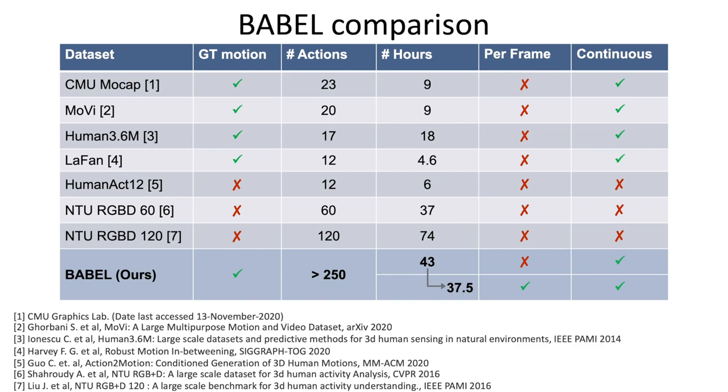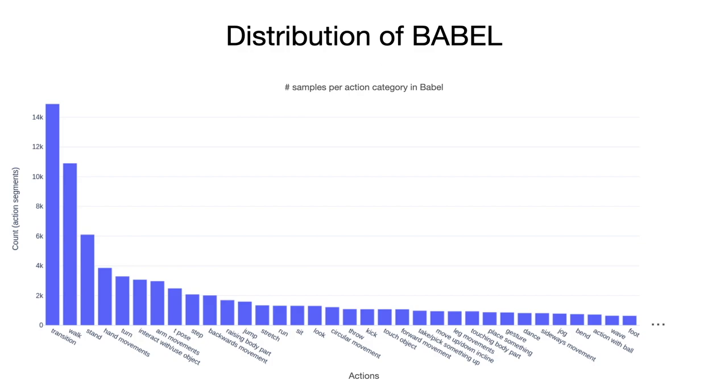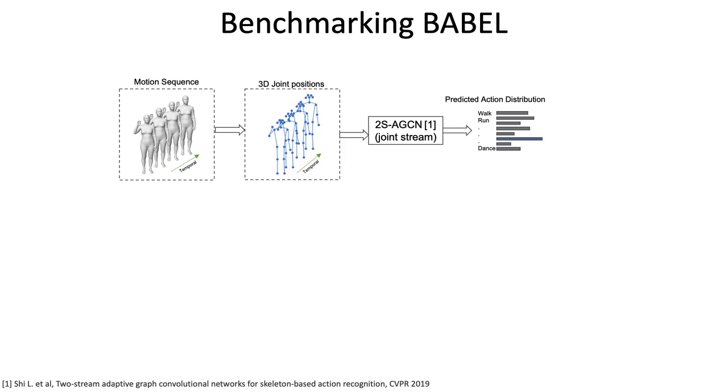Babel is the only large-scale 3D dataset with action labels for every frame of natural continuous human movement sequences. Unlike datasets with carefully controlled distribution of action classes, the distribution of action in Babel is long-tailed.